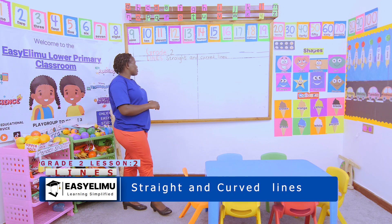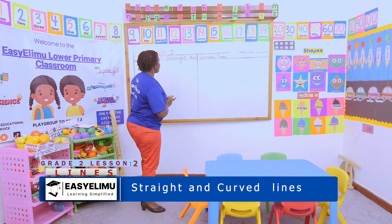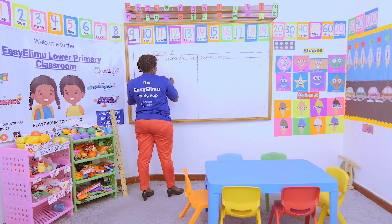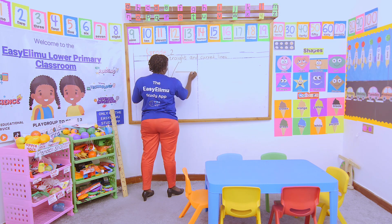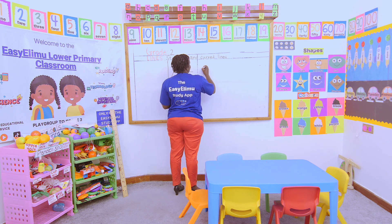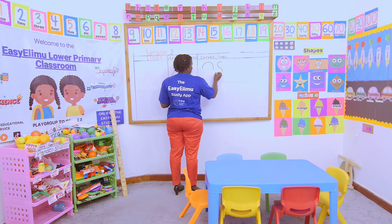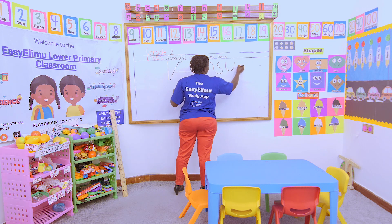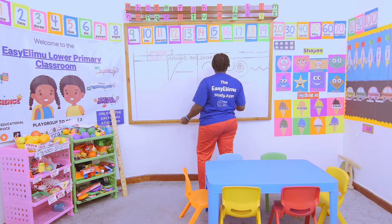We are talking about lines. In math, we have only two line formations. We have the straight line, which can go in different directions — all of these are straight lines. And we have the curved line, that can go like this, like this, like this — all of these are curved lines.